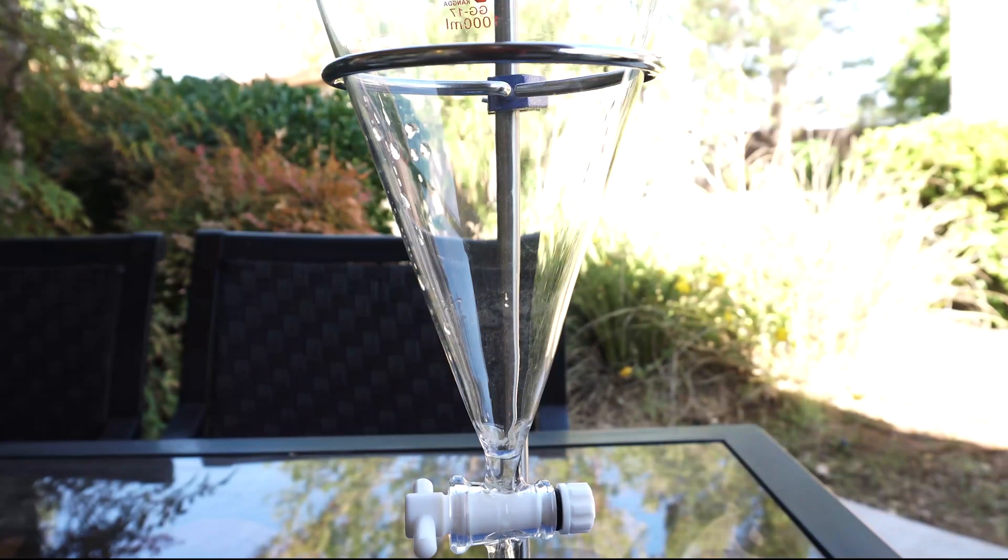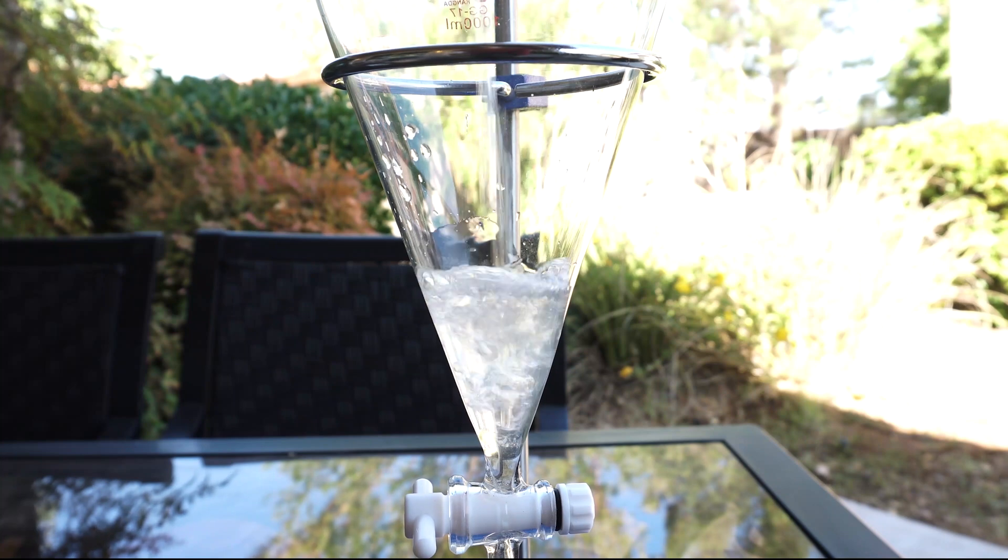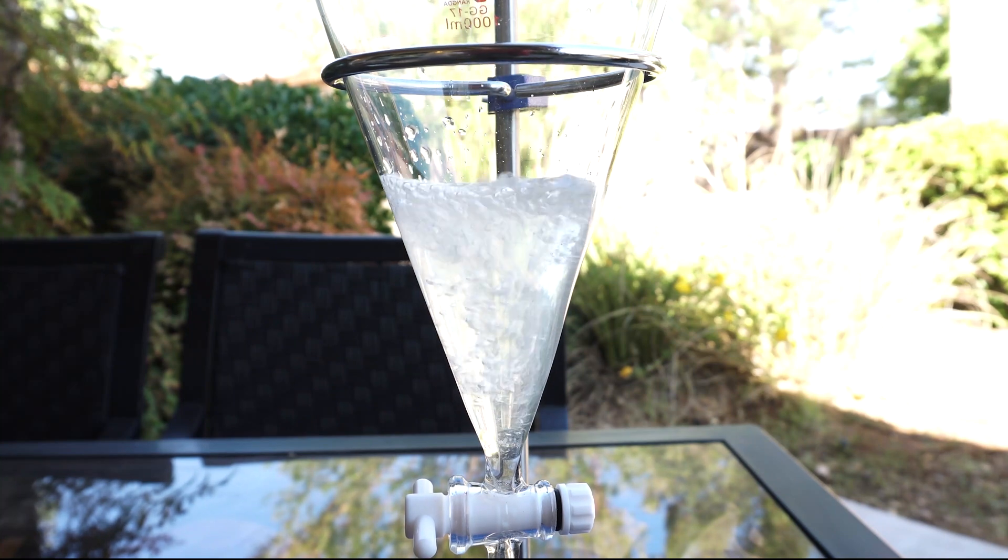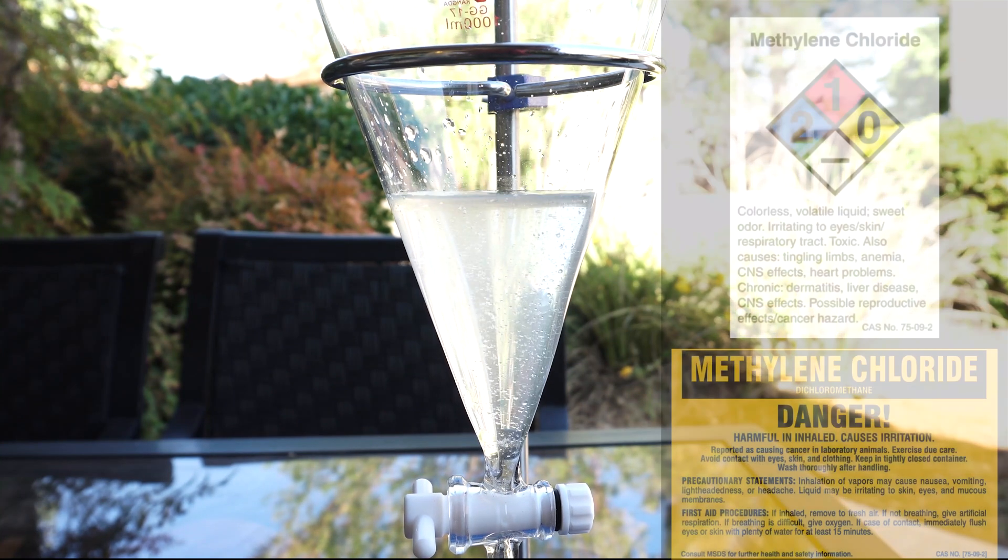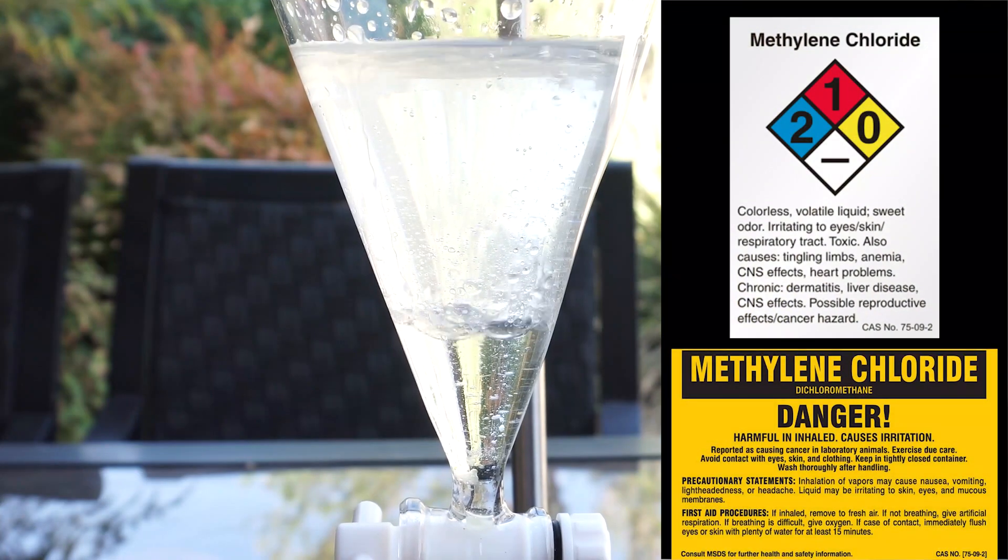Now comes the fun part. I pour about 150 milliliters of the distillate into my separation funnel, followed by 25 milliliters of methylene chloride or DCM for short.